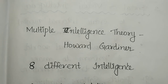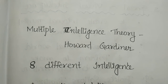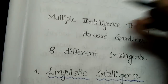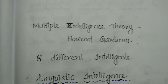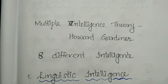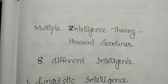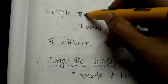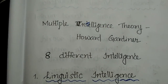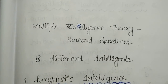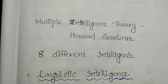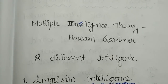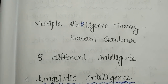The first one is Multiple Intelligence Theory. This theory was proposed by Howard Gardner. It is a theory about the nature and forms of human intelligence.